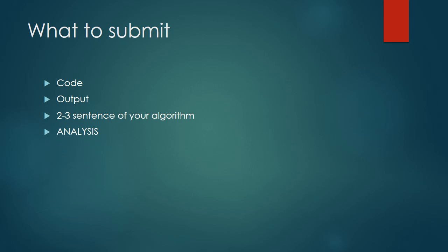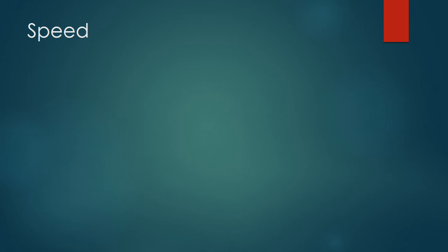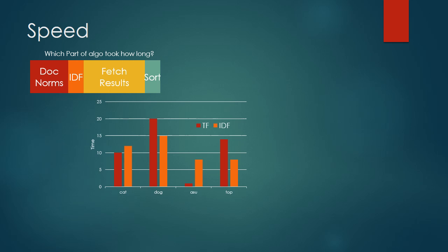For the majority of the points in this project, however, you have to analyze the speed of the algorithm and the correctness of the results. In order to analyze the speed of the algorithm, you have to do three things. The first thing you have to do is to evaluate which part of the algorithm took the most time. The second asks how the speed changes as you use TF-only or TF-IDF and the third task is to analyze the speed of the algorithm as you increase the number of terms in your query.